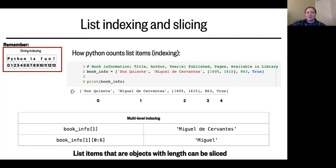Lists can be a little strange because objects inside can also have a length. For example, item one, Miguel de Cervantes, is a string. When we select it out, we get the full string, which we can then slice again. So book_info[1][0:6] — selecting the author and slicing characters zero up to six — gives us 'Miguel'.